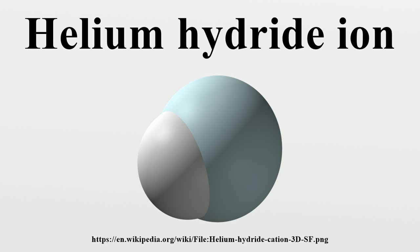One technique used to study reactions between organic substances and HeH⁺ is to make a tritium derivative of the organic compound. Decay of tritium to ³H⁺, followed by its extraction of a hydrogen atom, yields ³HeH⁺, which is then surrounded by the organic material and will in turn react. Extra helium atoms can attach to HeH⁺ to form larger clusters such as HeH₂⁺, HeH₃⁺, HeH₄⁺, HeH₅⁺, and HeH₆⁺, which is particularly stable.